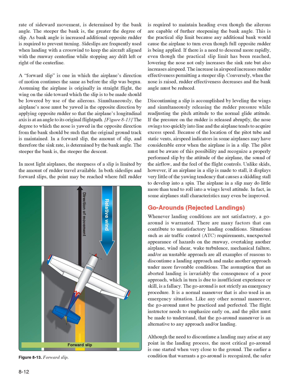Sideslips are frequently used when landing with a crosswind to keep the aircraft aligned with the runway centerline while stopping drift. A forward slip is one in which the airplane's direction of motion continues the same as before the slip was begun. To enter a forward slip, lower the wing on the side toward which the slip is to be made using ailerons, while simultaneously yawing the nose in the opposite direction using opposite rudder so that the airplane's longitudinal axis is at an angle to its original flight path. The degree to which the nose is yawed should maintain the original ground track. In a forward slip, the amount of slip and therefore the sink rate is determined by the bank angle—the steeper the bank, the steeper the descent. In most light airplanes, the steepness of a slip is limited by the amount of rudder travel available.